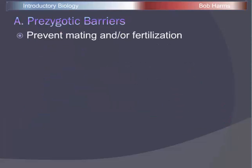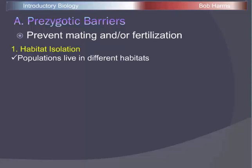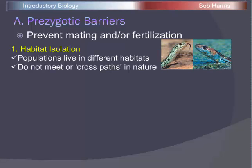The most common type is a prezygotic barrier, which prevents egg and sperm from getting together or prevents fertilization. For two species there may be several barriers in place — five or six — but the minimum is one. One example is habitat isolation, where two species live in very different habitats. At mating season they're never in the same area at the same time. A good example is two garter snake species — one lives on land and another in water, so they never cross paths to mate.